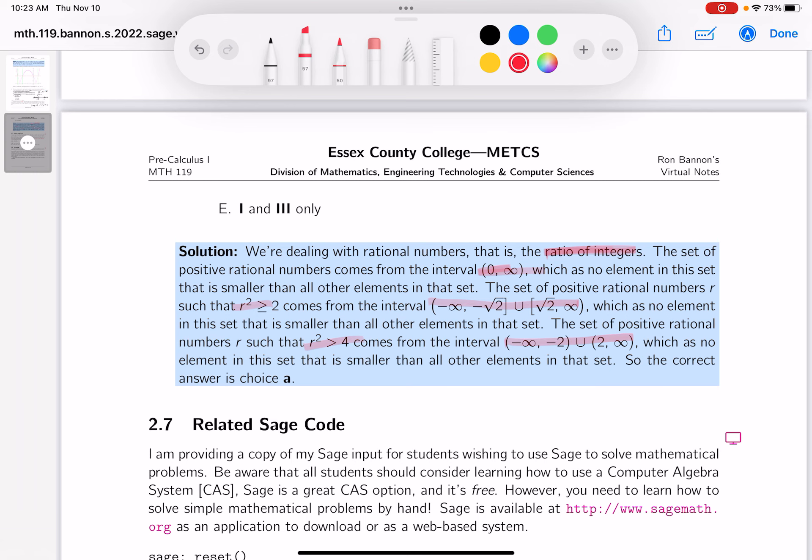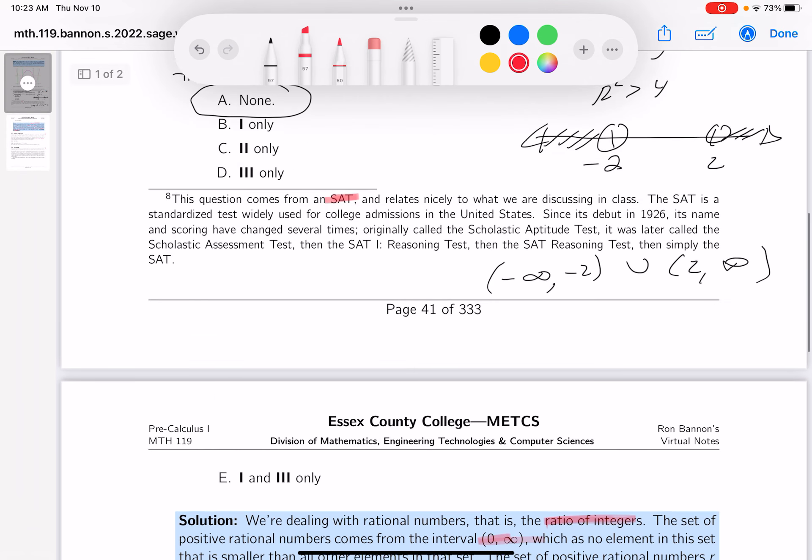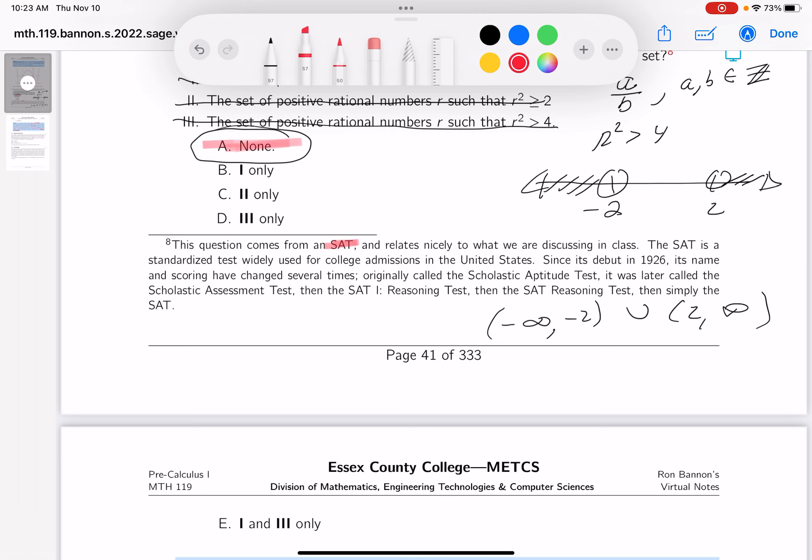And in all those sets, there's no such thing as a small element that's smaller than all others. So again, the answer would be A. The correct answer would be choice A. And what's choice A? None of those sets. Thank you so much.